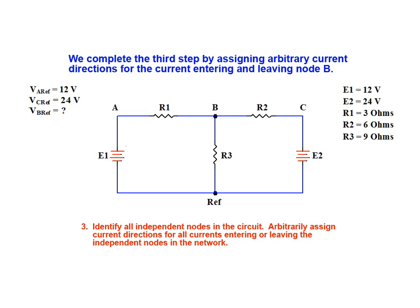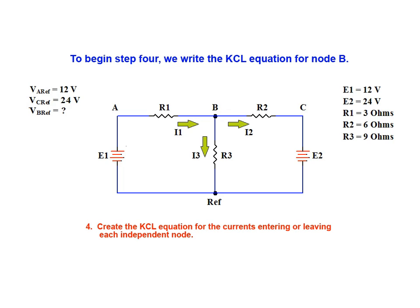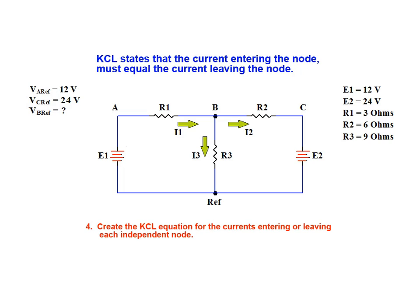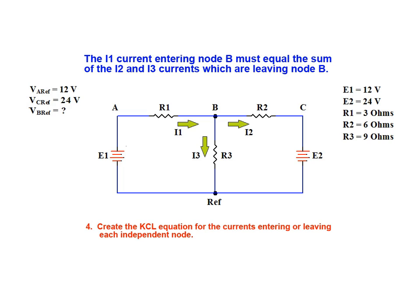We complete the third step by assigning arbitrary current directions for the current entering and leaving node B. To begin the fourth step of the process, we write the KCL equation for node B. Kirchhoff's current law states that the current entering a node must equal the current leaving the node. Therefore, the I1 current entering node B must be equal to the sum of the I2 and I3 currents which are leaving node B.